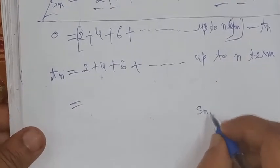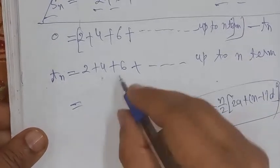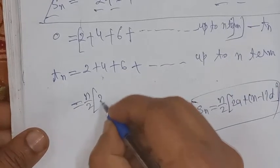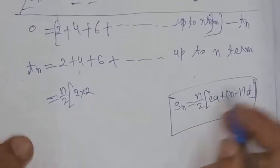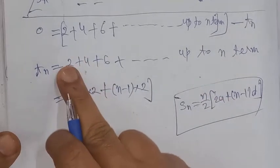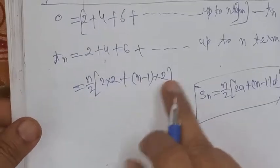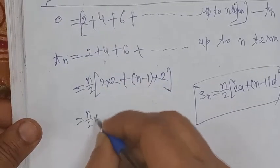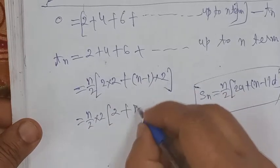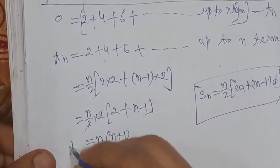Using the AP sum formula Sn = (n/2)(2a + (n-1)d), where a is the first term and d is the common difference: for the series 2 + 4 + 6 + ..., a = 2 and d = 2. The 2 cancels out, giving us the sum as n(n+1) or a related simplified form.